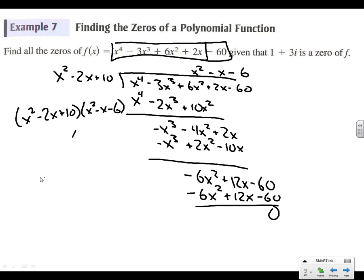We've got (x² − 2x + 10)(x² − x − 6). Can we factor x² − x − 6? Absolutely — that's (x − 3)(x + 2). So our zeros are: 3, negative 2, 1 + 3i, and 1 − 3i.